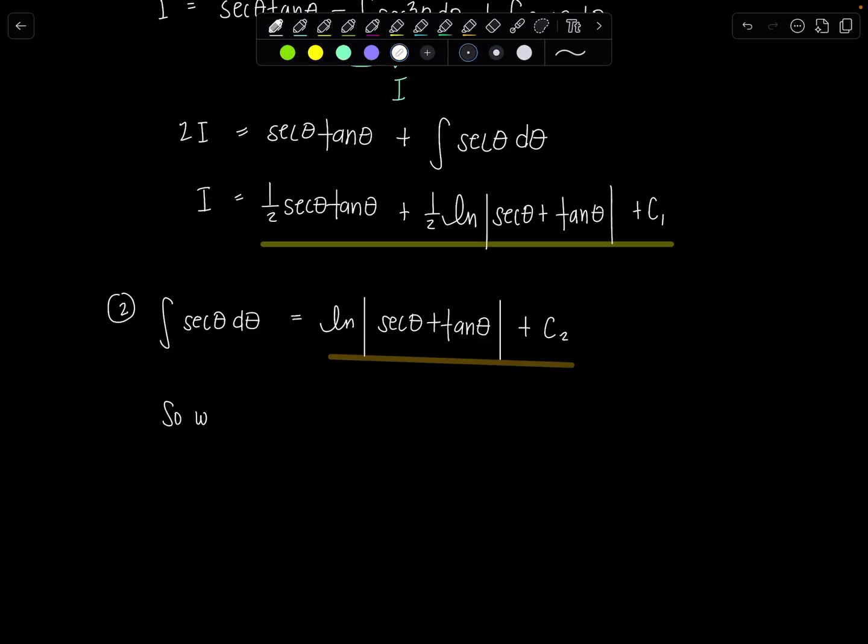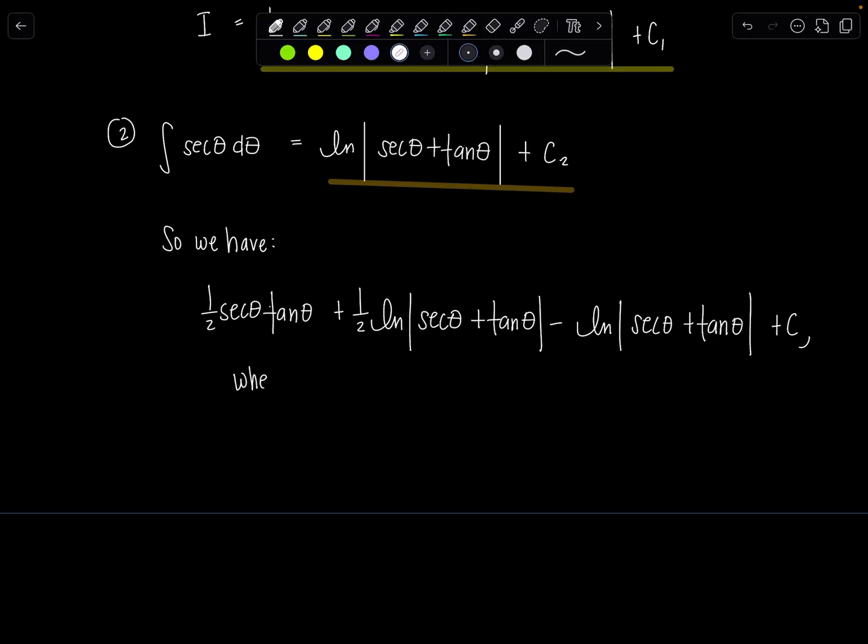So now tell the people what's going on. So we have 1/2 secant theta tan theta plus 1/2 natural log absolute value secant theta plus tan theta minus, this is integral 2, natural log secant theta plus tan theta. Now we'll say plus c, that's a comma, plus c, and then you have to tell the people who is this c. c is c₁ - c₂. And then yes, indeed, we can combine these. They're the same term. 1/2 ln secant theta plus tan theta minus 1. So that'll give me a minus 1/2.